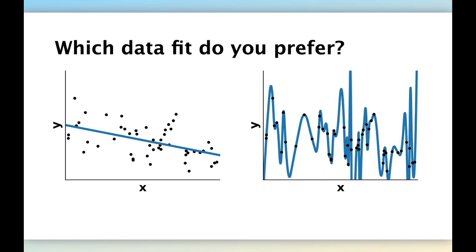Intuitively, most people will say that they prefer this straight line. It's a bit counter-intuitive because this one does not make any prediction error on the training set, and this one does make prediction errors on the training set because there is a difference between the predicted value in blue and the location of the observed y variables.